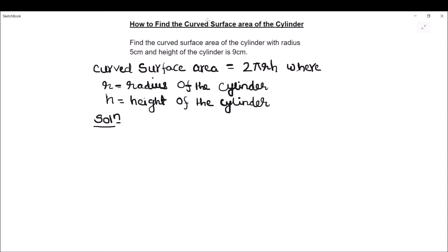Let us read our question. Find the curved surface area of the cylinder with radius 5 centimeters and height 9 centimeters. So we have been given radius as 5 centimeters and height as 9 centimeters.